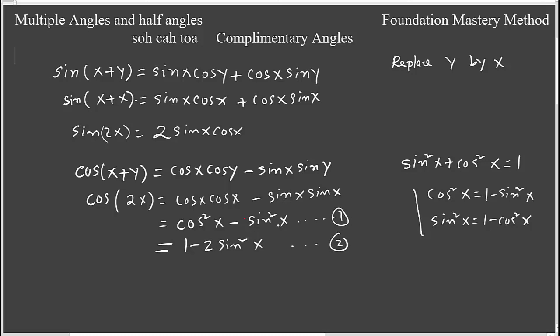On the other hand if I replace sine squared x by 1 minus cosine squared x, then it will be like 2 cosine squared x minus 1. So this is my third form. Now we can find half angle.